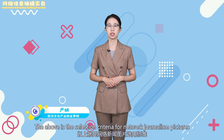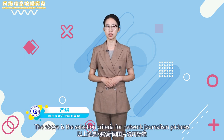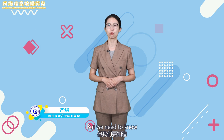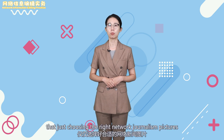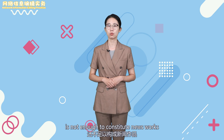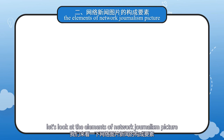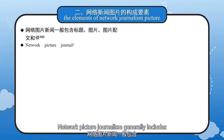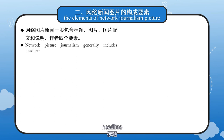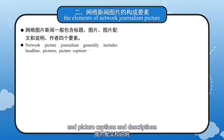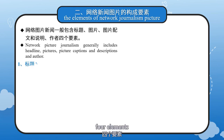The above covers the selection criteria for network journalism pictures. But we need to know that just choosing the right network journalism pictures is not enough to constitute news works. Next, let's look at the elements of network picture journalism, which generally includes four elements: headline, pictures and picture captions and descriptions, and author.